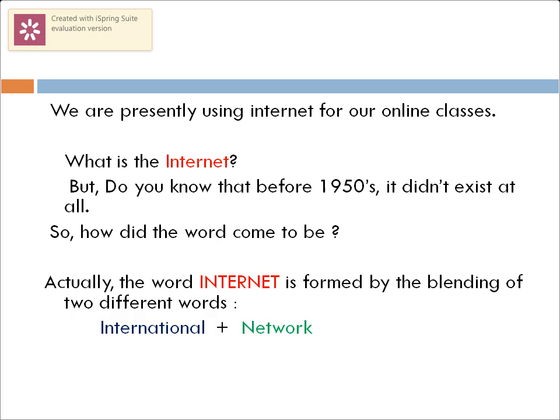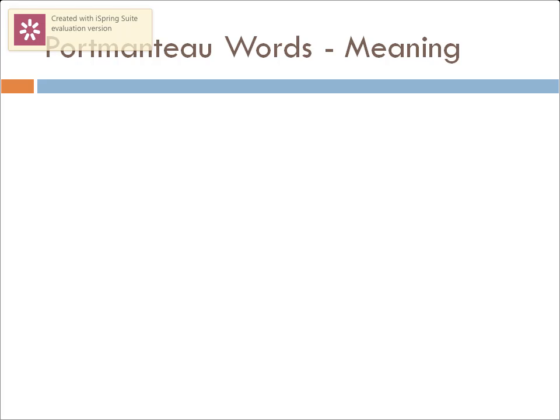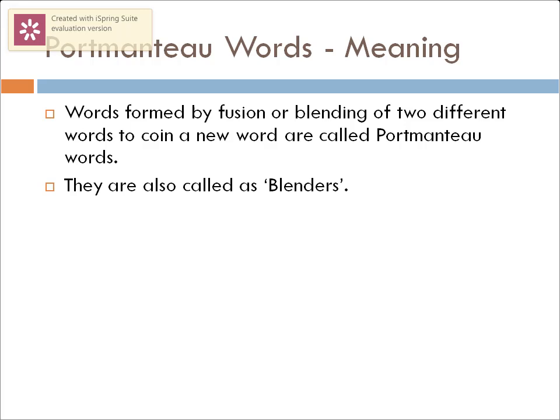How did the word come to be? The word 'internet' was formed by the blending of two different words — 'international' and 'network' — and when these two words were blended, they coined a new word, 'internet', to describe a phenomenon that did not exist before that period.